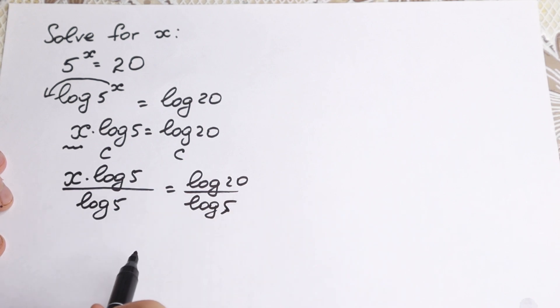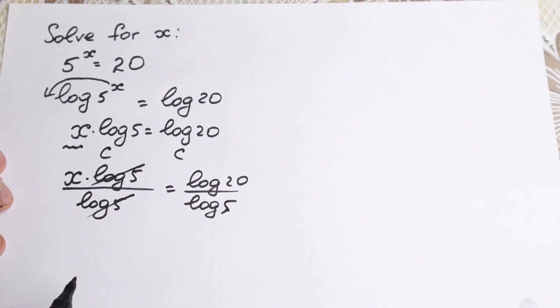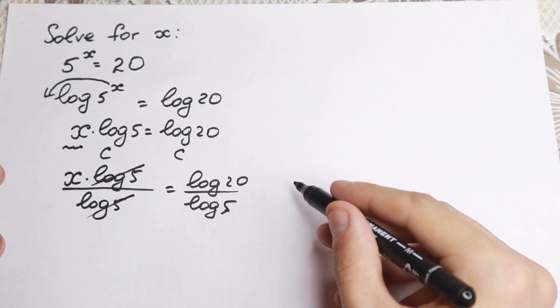And take a look closely on the left, we have the same constant in our numerator and denominator, so we can easily cancel this. And it looks like our final answer x equal to this fraction, log 20 over log 5.